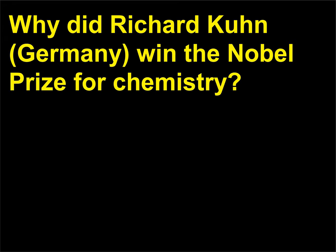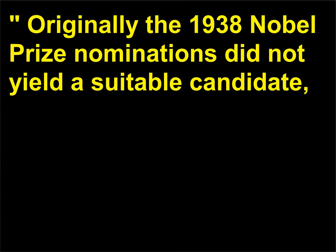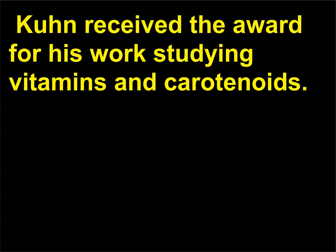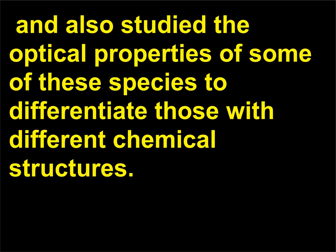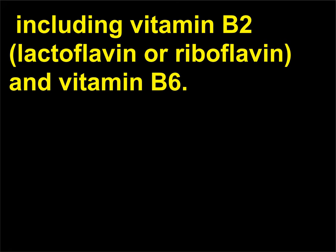For his work on carotenoids and vitamins. Originally the 1938 Nobel Prize nominations did not yield a suitable candidate, so the 1938 award was held until 1939, when it was awarded to Kuhn. Kuhn received the award for his work studying vitamins and carotenoids. He isolated and characterized the composition of numerous complexes and also studied the optical properties of some of these species to differentiate those with different chemical structures. He also made significant advances in the understanding of the chemistry of vitamin B complexes, including vitamin B2 (lactoflavin or riboflavin) and vitamin B6.